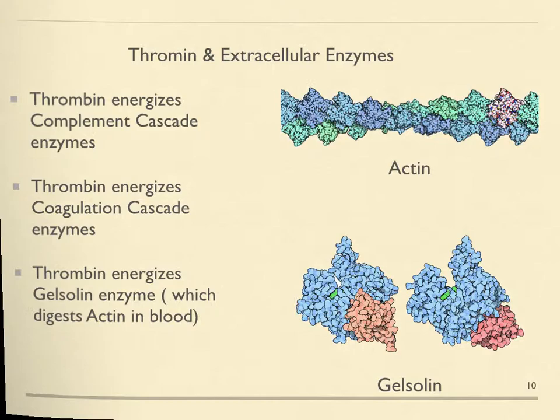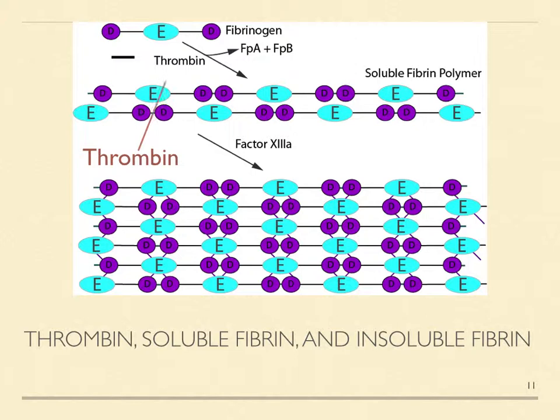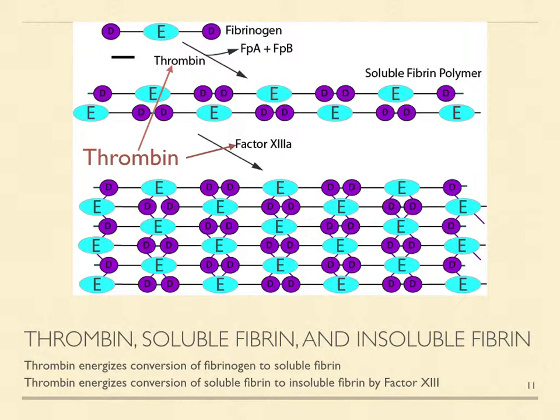Thrombin energizes the conversion of fibrinogen to soluble fibrin, which facilitates tissue repair, and the subsequent conversion of soluble fibrin to insoluble fibrin, which enables hemostasis and the regulation of blood flow in tissues and organs. Thrombin also stabilizes insoluble fibrin by energizing thrombin-activated fibrinolysis inhibitor.